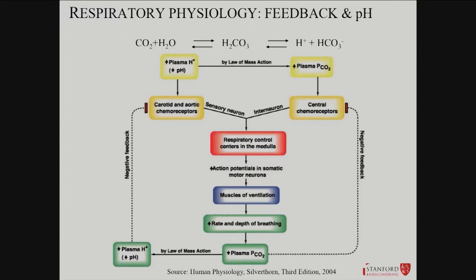How are all these things detected? A lot of it involves acid, but there's some very active neural detection. There are receptors in the central nervous system that detect acid, and there are also detectors for oxygen. This information gets integrated in the medulla, which acts as a respiratory center, sending signals to the motor neurons that control the diaphragm and intercostal muscles, regulating the strength and depth of breathing.